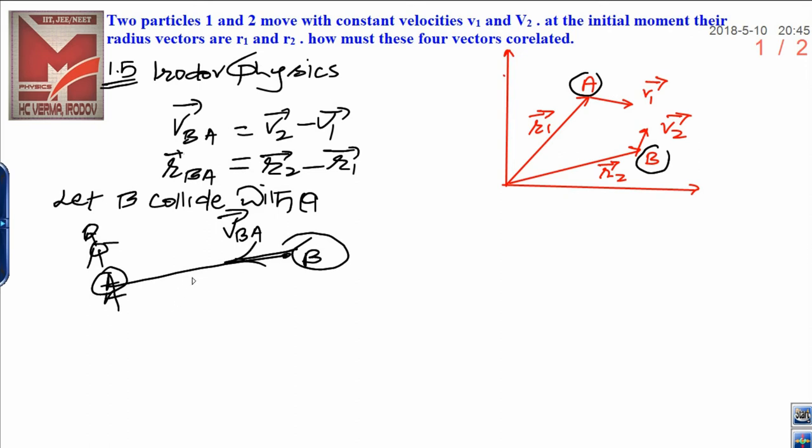We can write here, if we apply the condition of collision, vBA vector should be parallel to rBA.